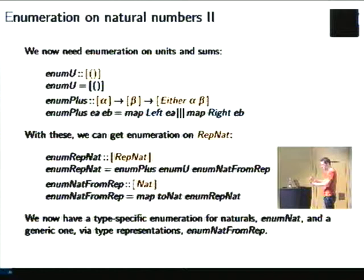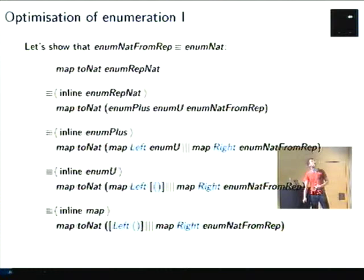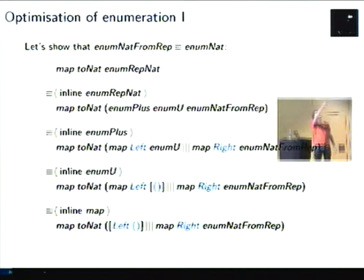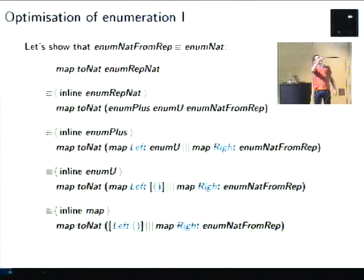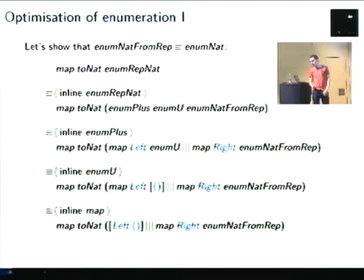We now have two enumerations on naturals: one operating directly on natural numbers, and one operating on the representation. We want to see how we can go from the second to the first, because that's the optimization we're interested in. Let's see how we do this by hand. We start with this definition and begin by applying some definitions: we inline enum-rep-nat to get enum-plus, then inline enum-plus itself to get the interleave of two maps. Then we inline enum-u — we're applying a map to a single-element list, so we can just inline that and get the single-element list with unit.